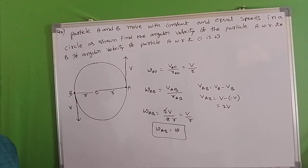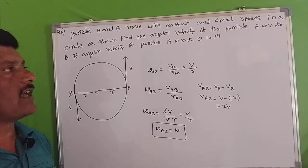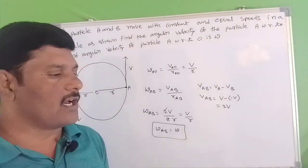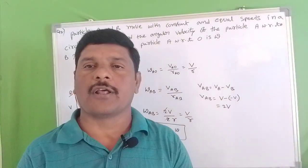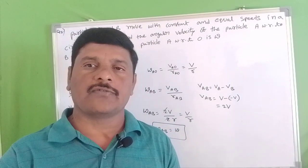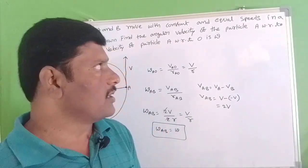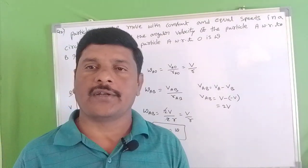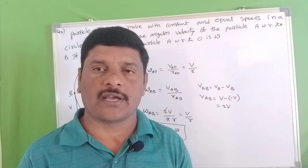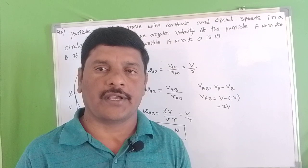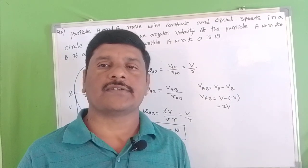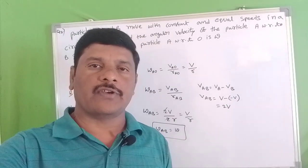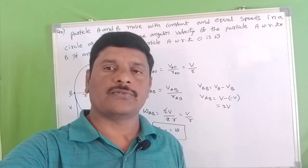In this way we can solve angular velocity and linear velocity problems using the formula V equals R times omega with different models. In the next videos, we will discuss more problems. Most important questions for M-set, mains, and entrance exams will be covered in the next videos.